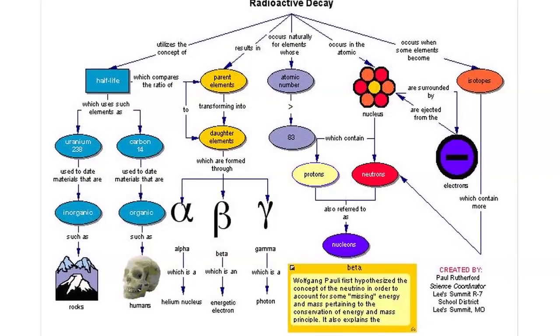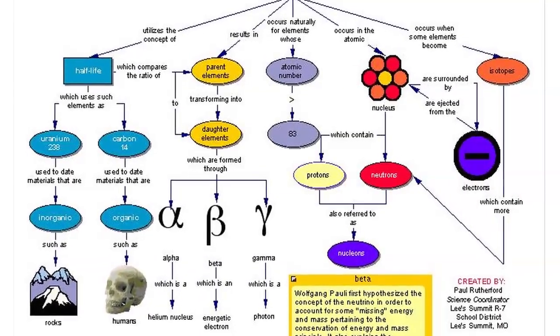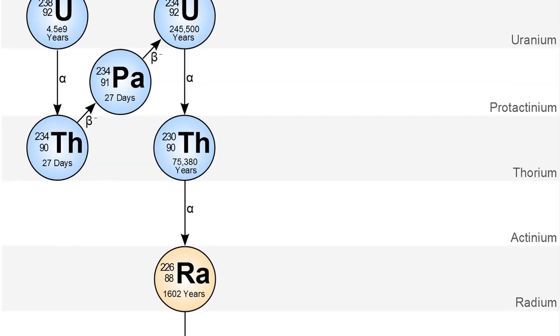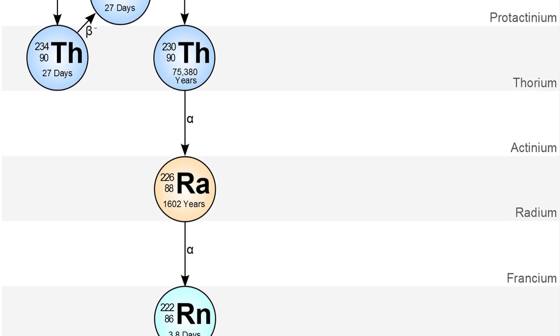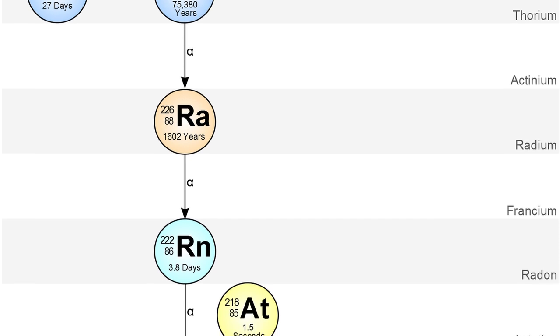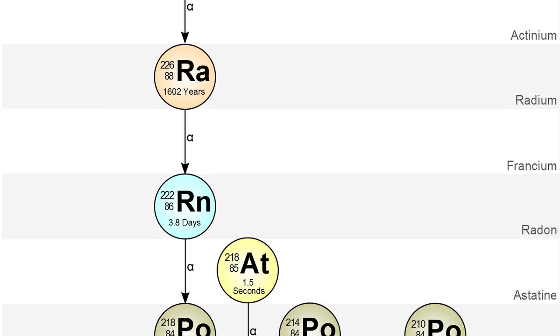Most radiometric dating methods have built-in cross-checks due to the decay of isotopes in their decay chains. For example, there are 26 isotopes in the decay chain of uranium-238, including thorium, radon, and polonium. Each of these isotopes, in turn, have their own half-life.